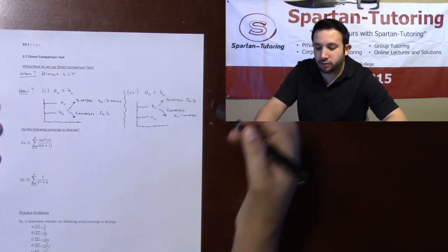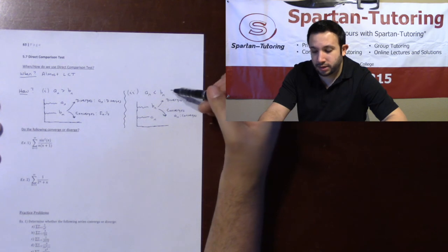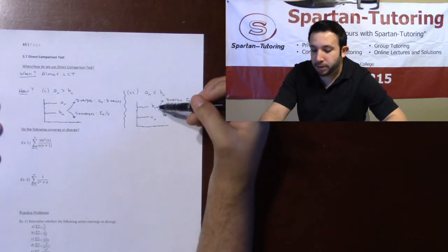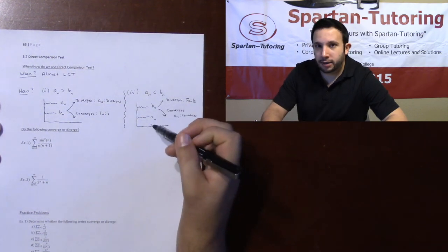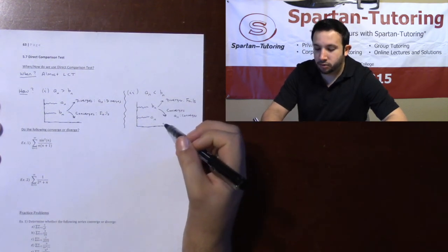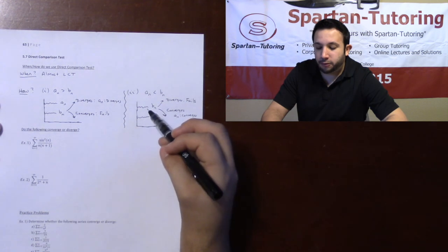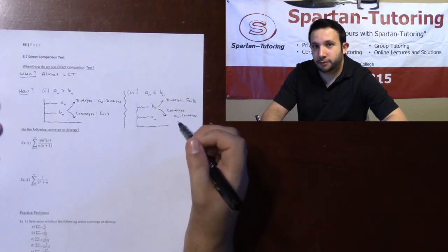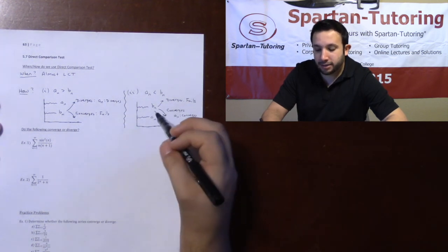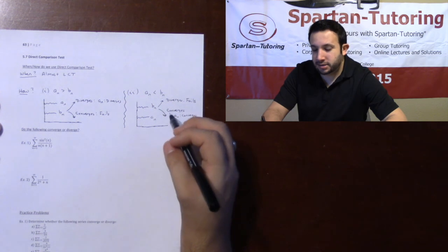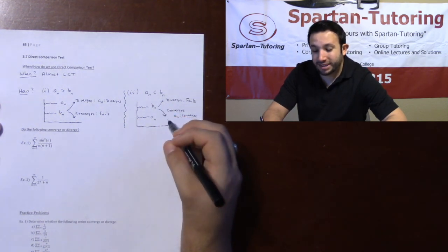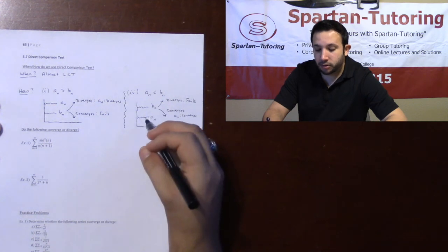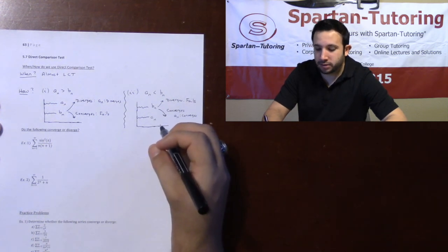Your other situation is if the series you choose is bigger. If the bigger series diverges and goes to infinity, I have no clue what A_n is doing. However, if your bigger series converges — meaning it has a finite sum and converges to some number — then the smaller series must converge as well.